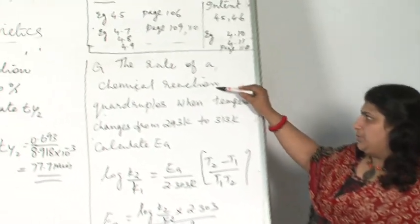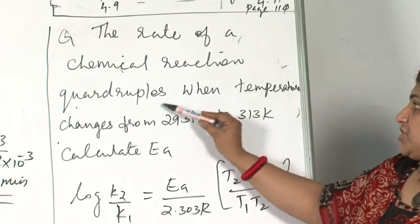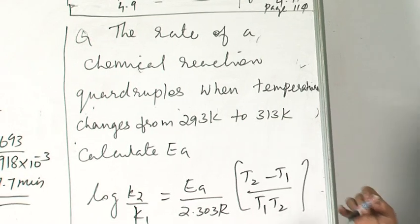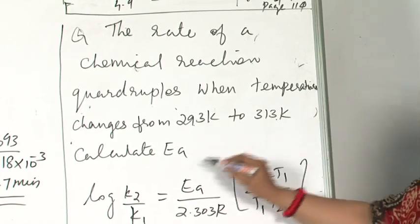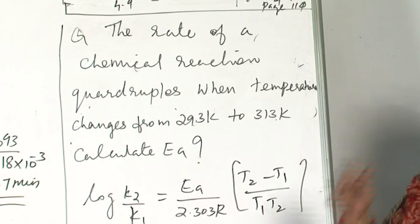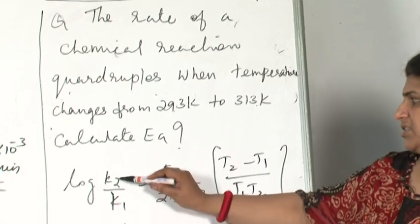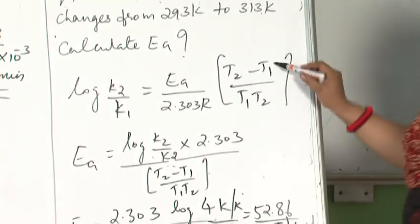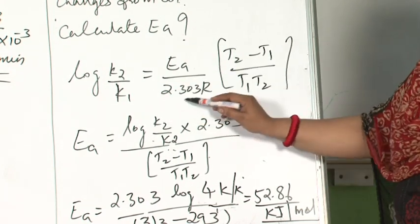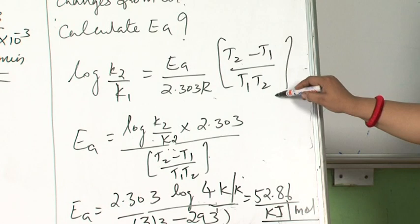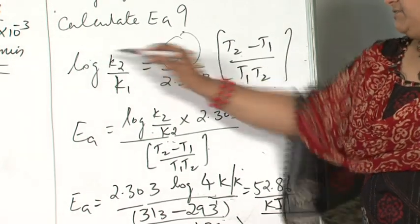Here, the second question is based on Arrhenius equation. The rate of a chemical reaction quadruples, meaning k becomes 4k, when temperature changes from 293K to 313K. Calculate activation energy. It should immediately click you—it's Arrhenius equation. Log k2 upon k1 equals Ea upon 2.303R times (T2 minus T1) upon T1 T2. I am writing the expression for Ea.